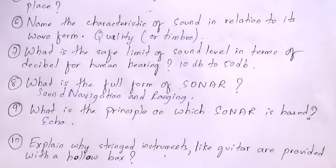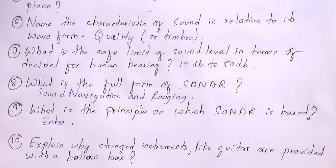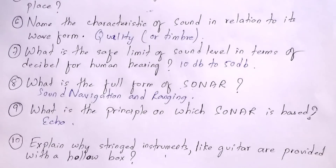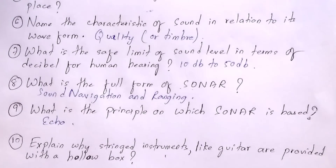Besides these questions, there are simple numerical problems asked from the chapter on sound. You need to remember some formulas; one important formula is v = 2d/t. These are the most important questions from this chapter. Thanks for watching — if you want the PDF, it is available in the description box.